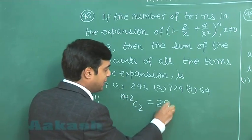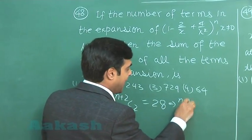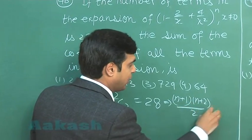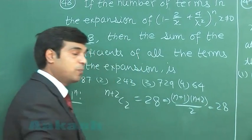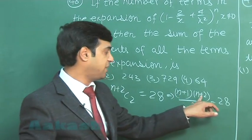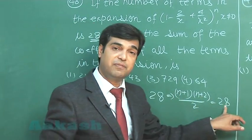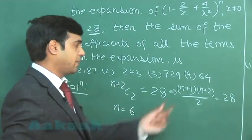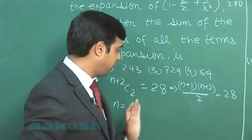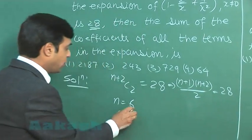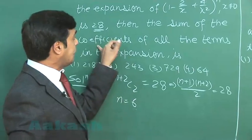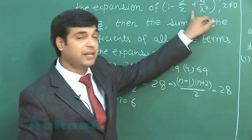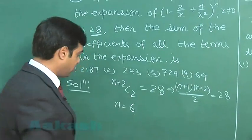That is (n+1)(n+2)/2 equals 28, so the product of two numbers (n+1)(n+2) is 56. That gives n equals 6, because 7 times 8 is 56. Now the sum of coefficients is simply obtained by substituting x equals 1.